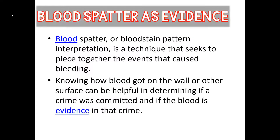Investigators are going to analyze those blood stains, and analysts can correlate the static blood stains at a crime scene with the dynamic forces that caused them. So they're going to look at types of blood stains like impact spatter, cast-off spatter, and transfer stains. They'll examine the size and shape of those blood stains to recreate the events at the crime scene, and this can also confirm or disprove stories from suspects or witnesses.